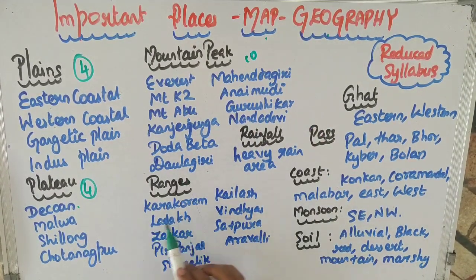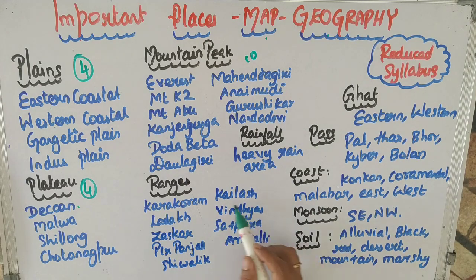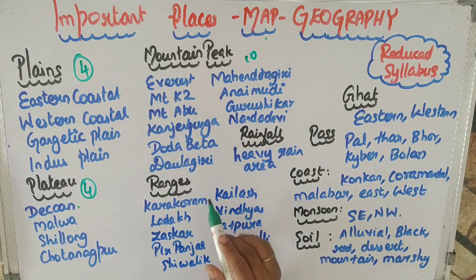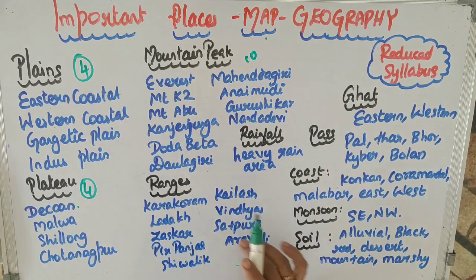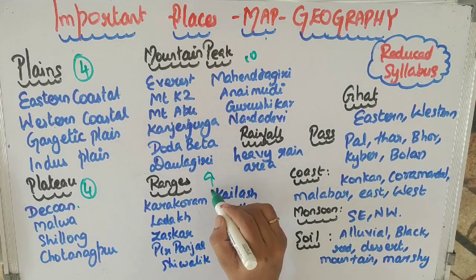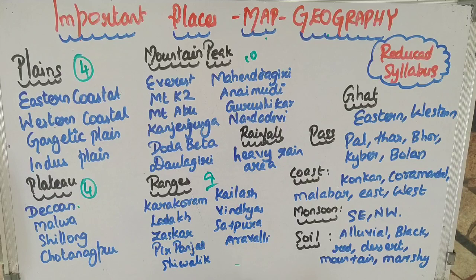We are going to look at the ranges: Karakoram, Ladakh, Jaskar, Pripanjal, Shivalik, Kailash, Vindhya, Sathpura, and Aravalli. This is a 9 range.